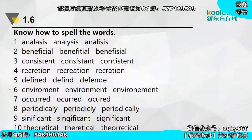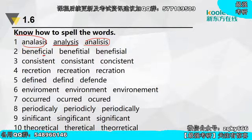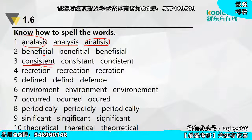下面来做练习，找出拼写不对的。第一个已经帮我们找出来了，是对的。第二个beneficial，要记清楚发那个音的是C而不是T——虽然benefit是T，但beneficial变成C了。Consistent里面是两个S，还是一个C一个S？应该是consistent，两个S，是TENT不是TANT。